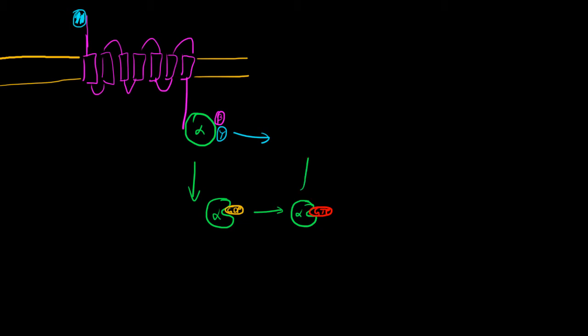So once we have this active alpha subunit, we're going to swing back up and actually hit, in this case, another membrane-bound enzyme. So what this enzyme is, is called phospholipase C.